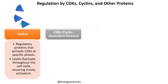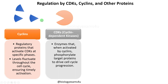The second class is the CDKs, or cyclin-dependent kinases. As the name suggests, cyclins bind to these cyclin-dependent kinases and activate them. Once activated, the cyclin-CDK complexes phosphorylate target proteins to drive cell cycle progression. These are the proteins involved in cell cycle progression.